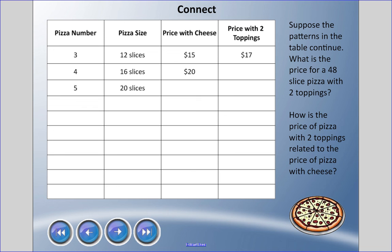Suppose the pattern in the table continues. What is the price for a 48-slice pizza - this is a ridiculous question, there's no such thing as a 48-slice pizza, but just imagine. What is the price for a 48-slice pizza with two toppings, and how is the price of a pizza with two toppings related to the price of a pizza with cheese? The pattern rule should continue, we're going to fill this in. Pause that for a sec, write on a scrap piece of paper and come back.